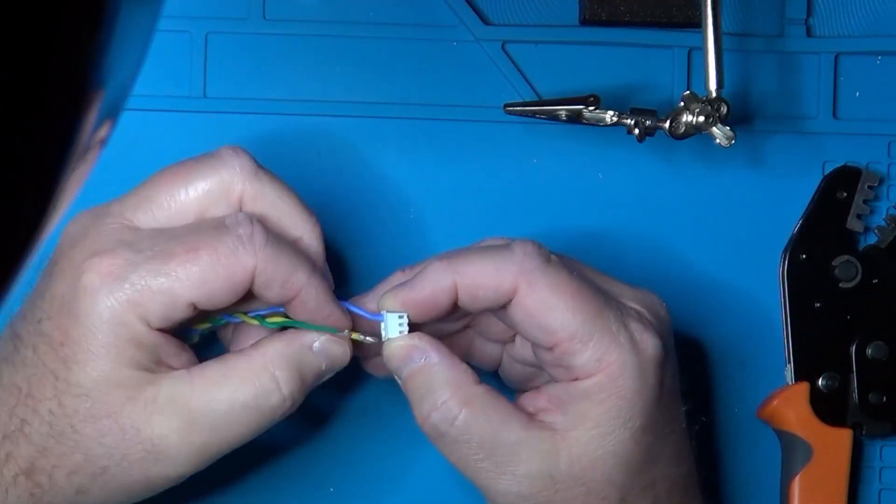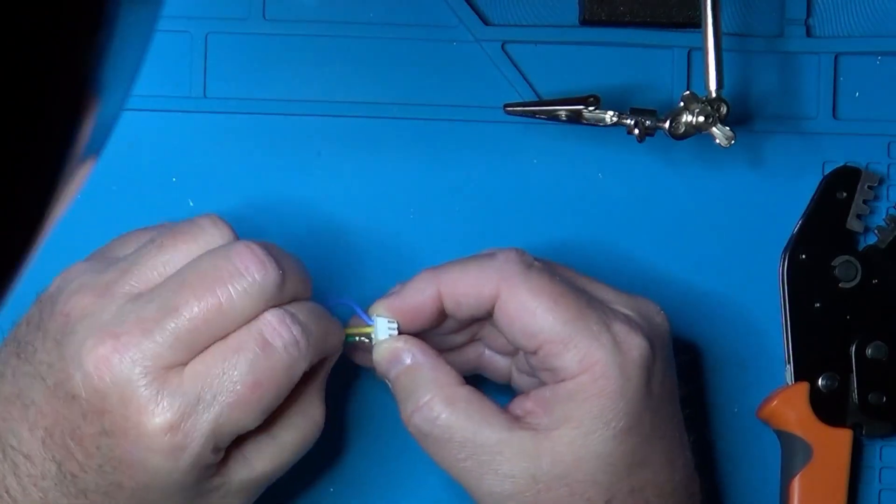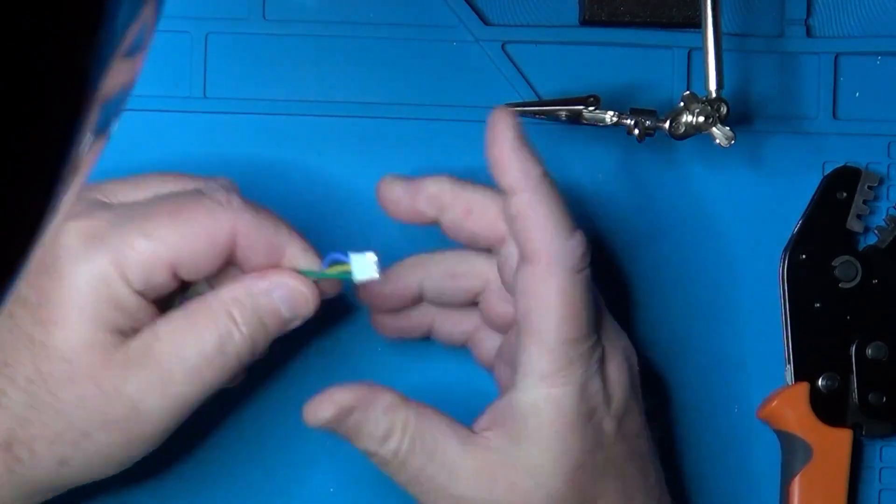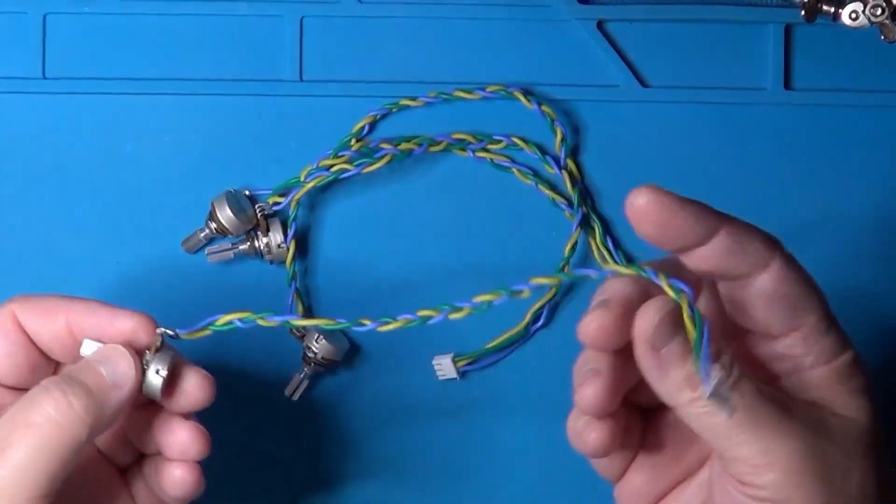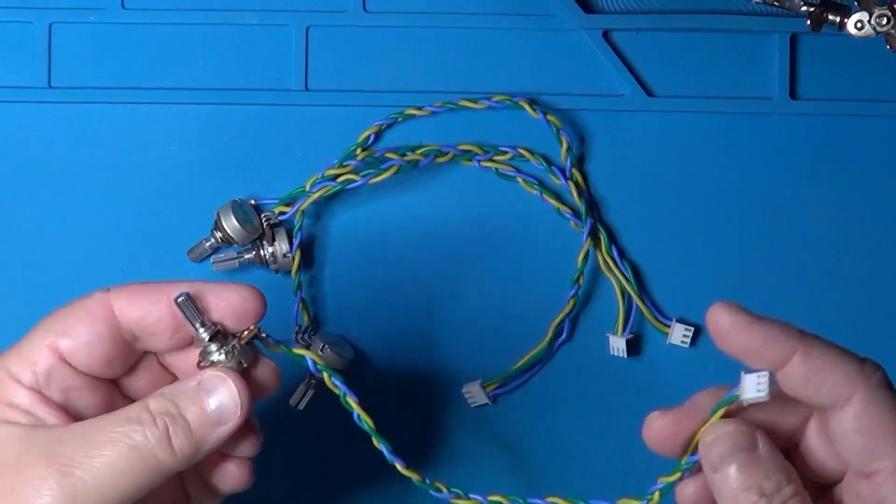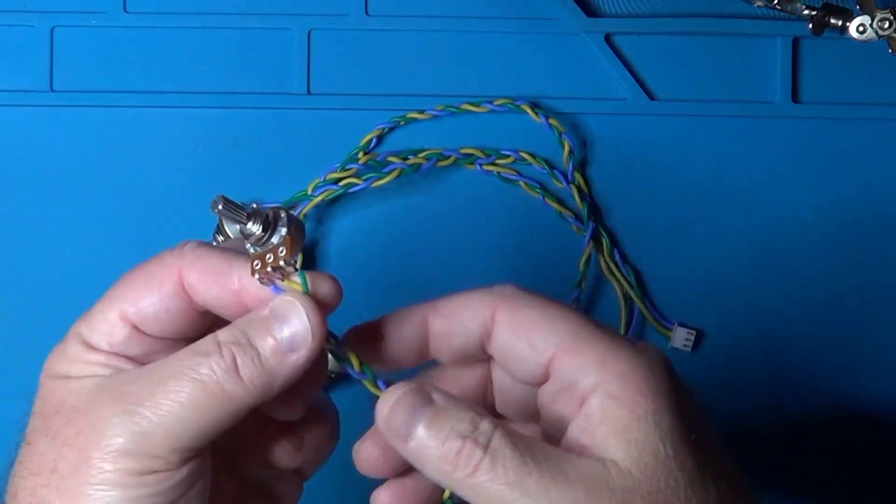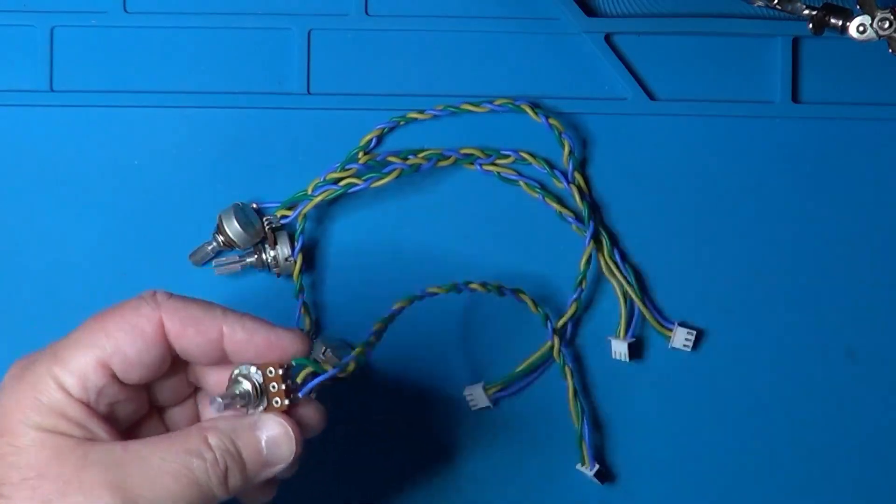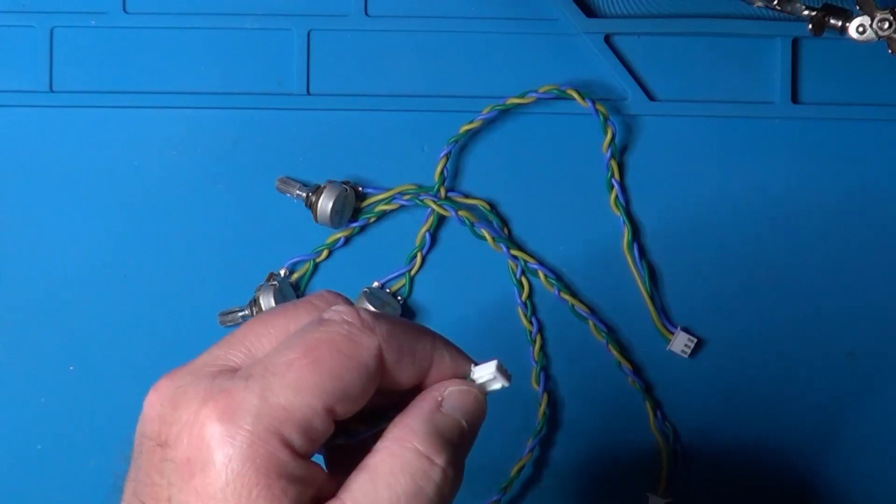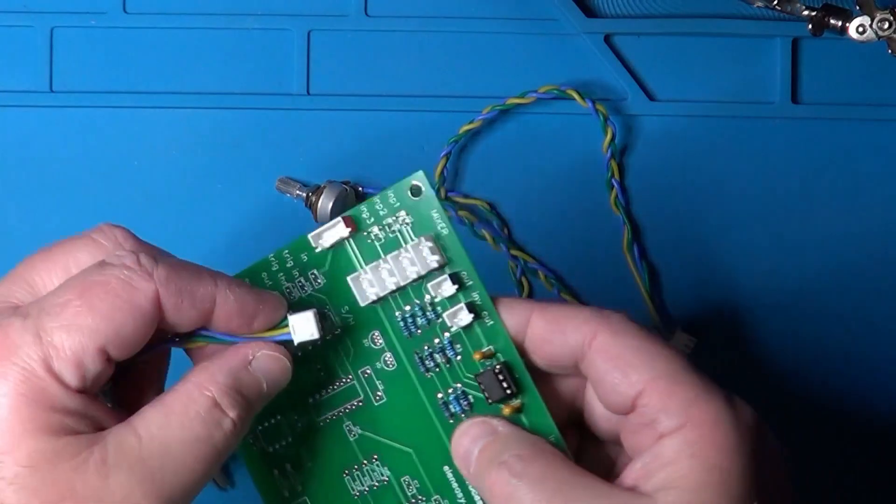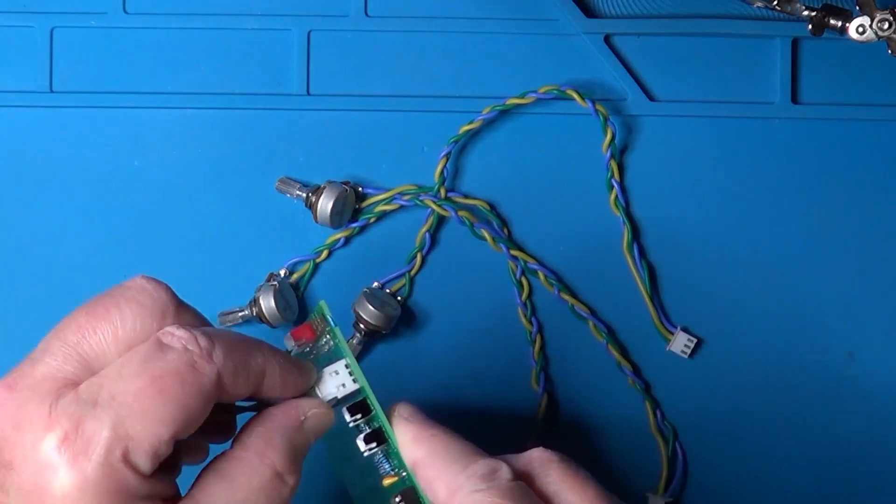When you do so, just make sure that you insert the pins in the right order, otherwise the potentiometers will be connected wrongly to the PCB. Here are all the potentiometers ready to be connected to the PCB. There are three potentiometers that will be used for the level adjustment of the mixed inputs and one potentiometer that adjusts the offset of the output signal. Each potentiometer terminates in a JST connector that will fit nicely in the corresponding socket on the PCB.